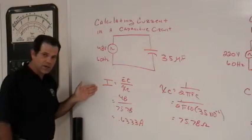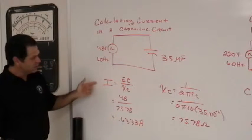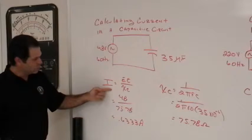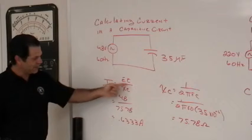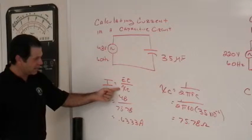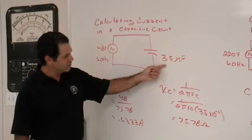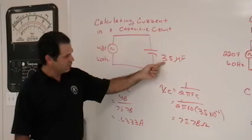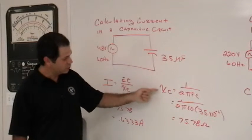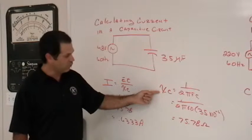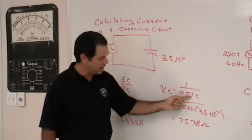The formula for calculating current in this capacitive circuit is I equals total voltage divided by the value of capacitive reactance. Since the value of the capacitor is in farads, we need to convert this to capacitive reactance using the X sub C formula, 1 over 2 pi FC.